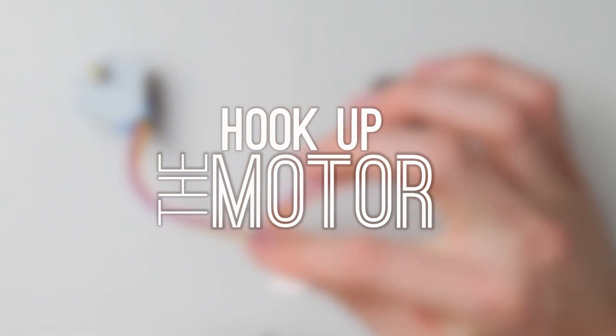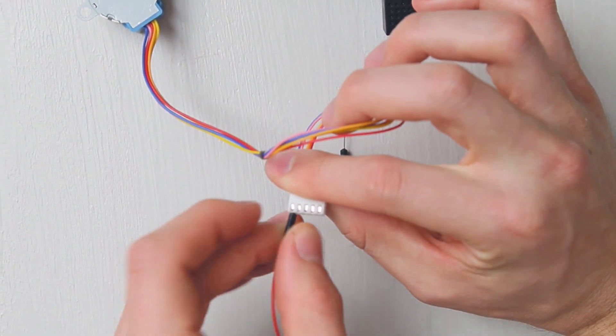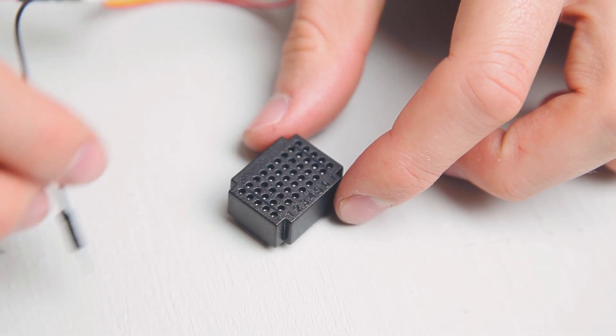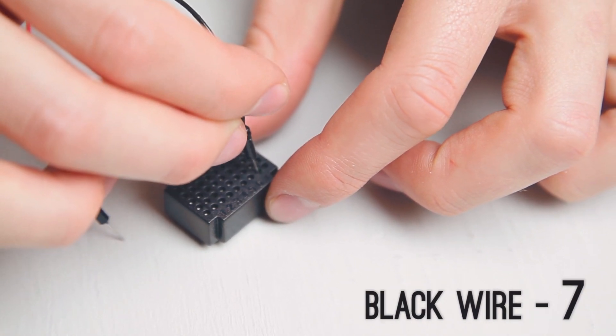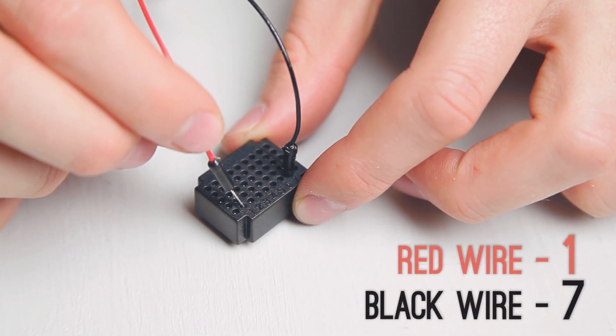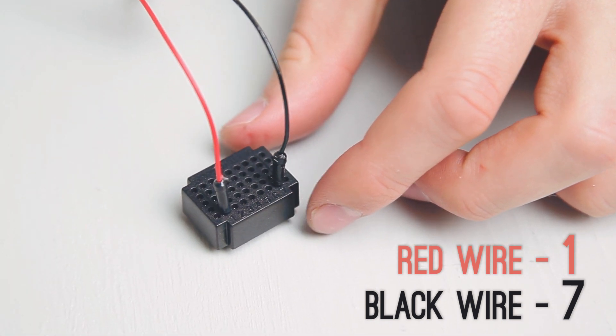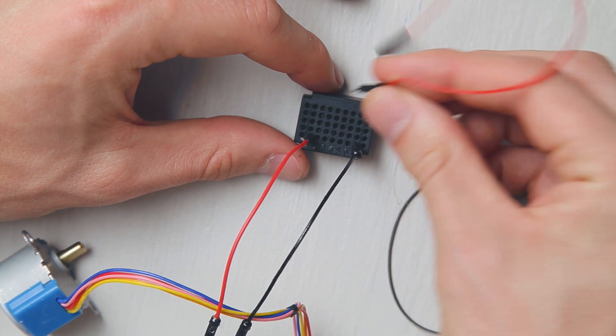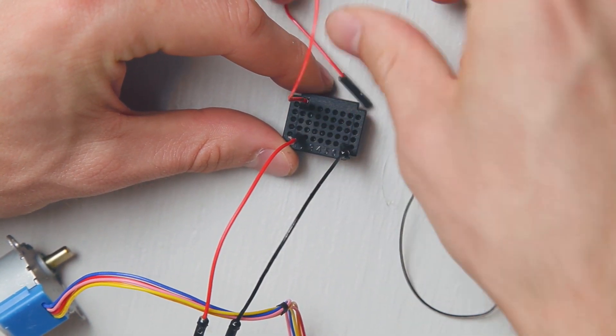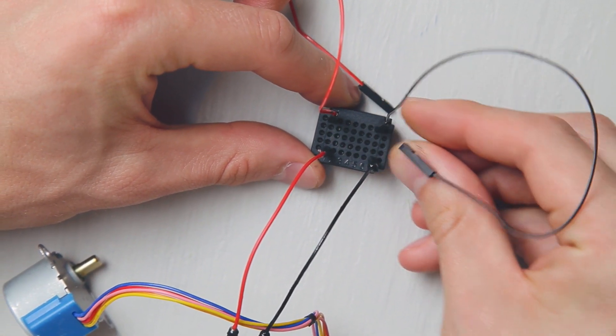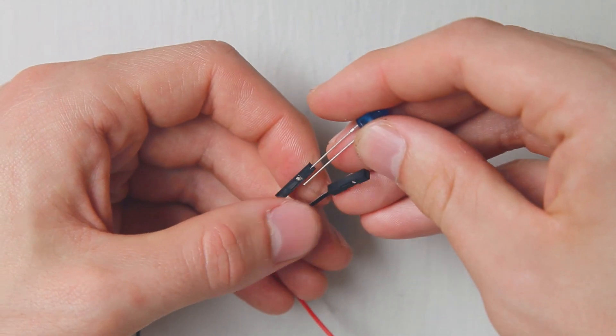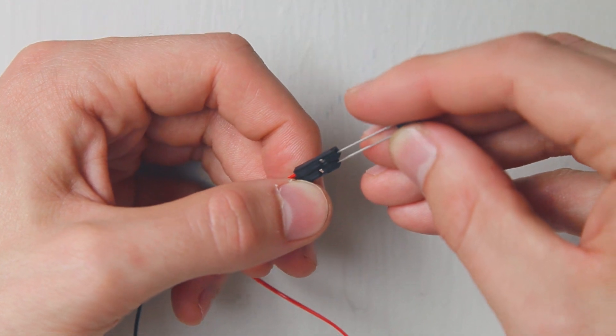First, let's hook up our motor. Find the two jumper wires that have pins on each end. Black one between the motor and column seven on your breadboard. Attach the red one between the motor and column one on your breadboard. Grab your other two black and red jumper wires. Connect the red again to column one and the black again to column seven. Connect the two jumper wires with a blue LED.